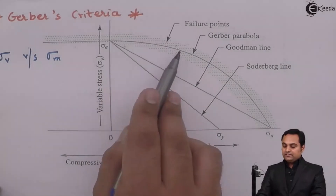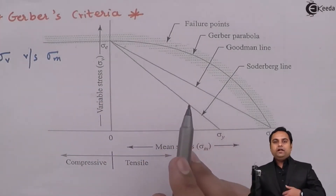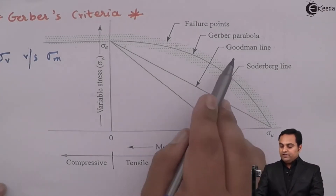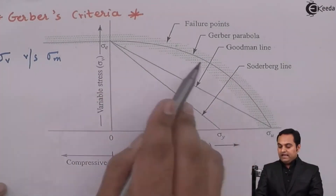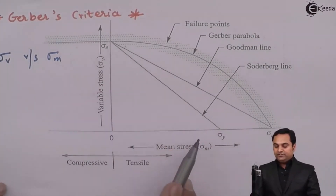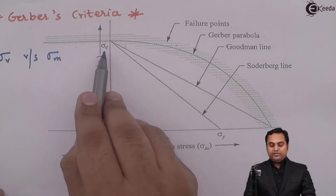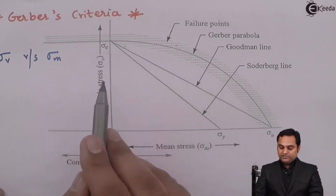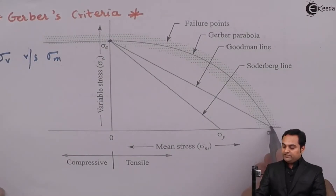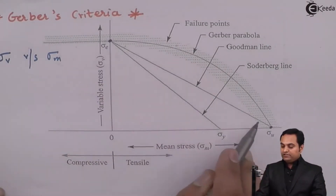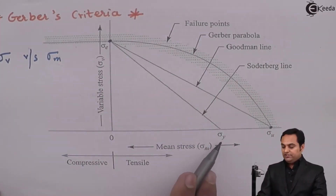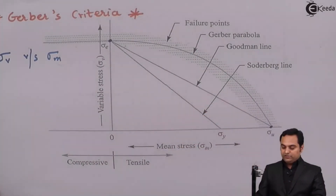Since these points are scattered, we modify the system, and that modification is in the form of the Goodman line and Soderberg line, which are straight lines instead of a parabola. If we join the sigma_e value (endurance stress) to the ultimate stress, it is called the Goodman line. If sigma_e is connected to sigma_y (yield stress), that is called the Soderberg line.